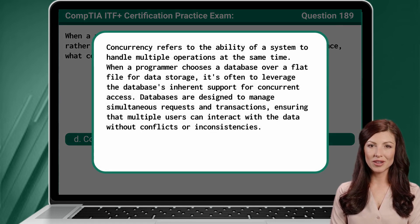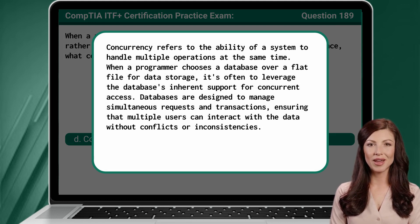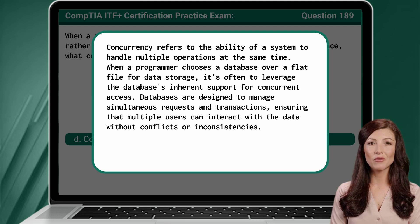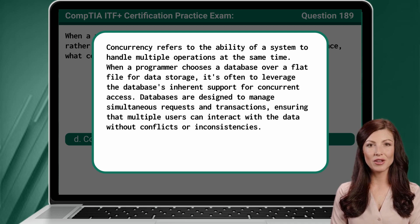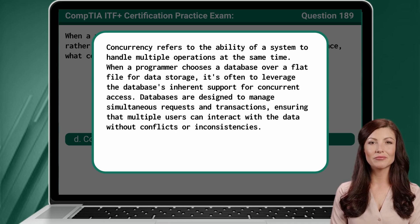Concurrency refers to the ability of a system to handle multiple operations at the same time. When a programmer chooses a database over a flat file for data storage, it's often to leverage the database's inherent support for concurrent access. Databases are designed to manage simultaneous requests and transactions, ensuring that multiple users can interact with the data without conflicts or inconsistencies.